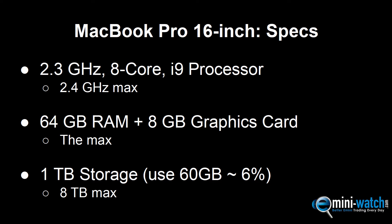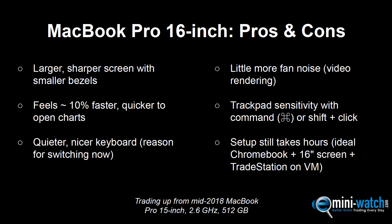I maxed out the RAM to 64 gigabytes, which is fantastic — they've got that option now. The graphics card is an 8-gigabyte version instead of the 4-gigabyte. In terms of storage, I went with the minimum one terabyte, which is the lowest spec you can choose — it goes up to eight terabytes. I don't even use a fraction of that because I use Google Drive; everything is in the cloud. I'm only using about 60 gigabytes, roughly 6% of available storage. But the 64 gigabytes of RAM was an important factor, which is one of the reasons I wanted to upgrade.